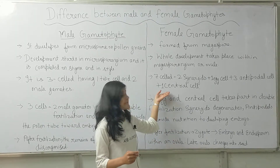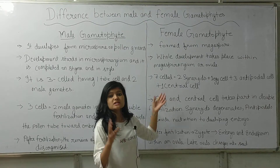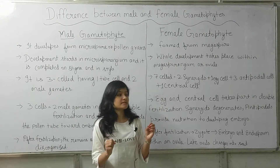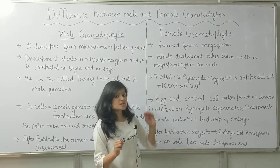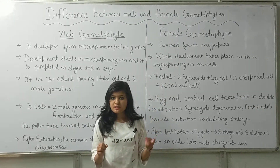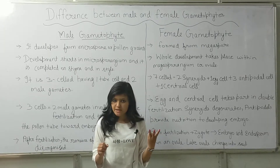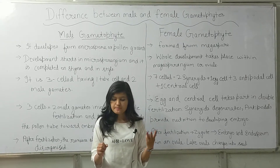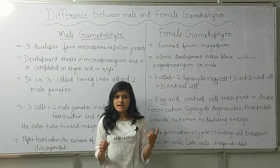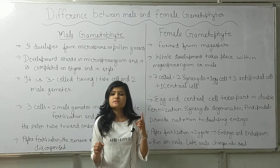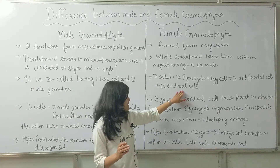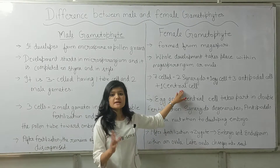Our female gametophyte is formed of seven cells: two synergids, three antipodal cells, one egg cell, and one central cell. So a total of 7 cells are made.